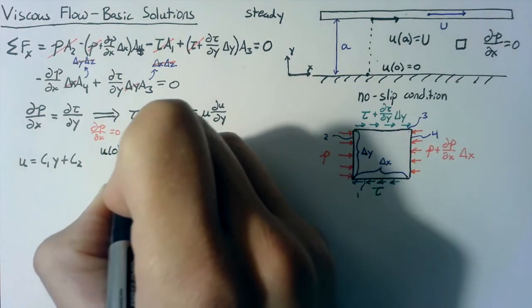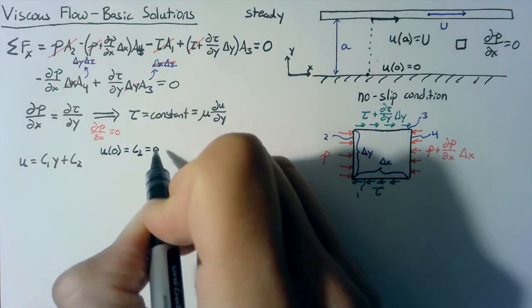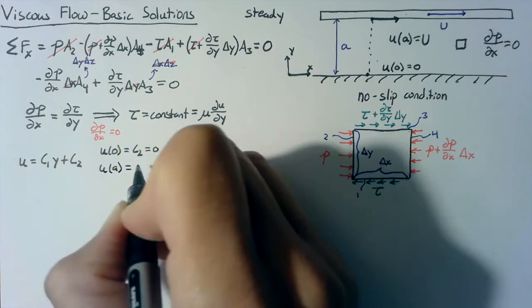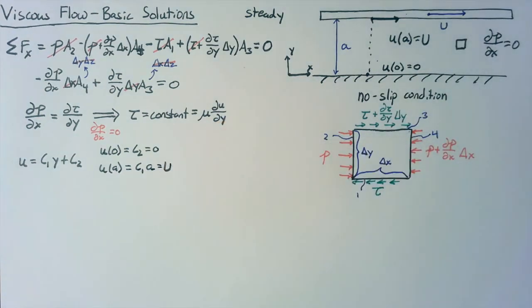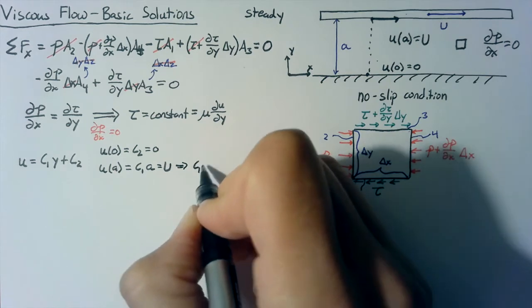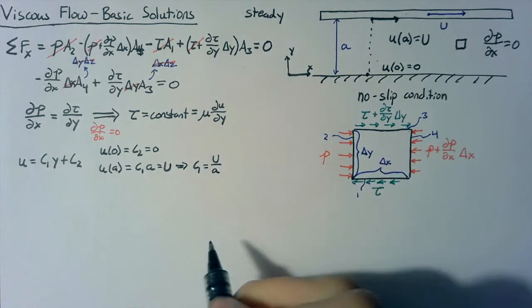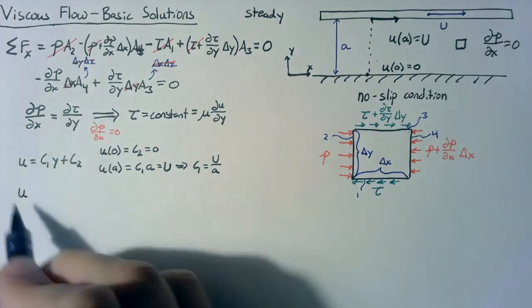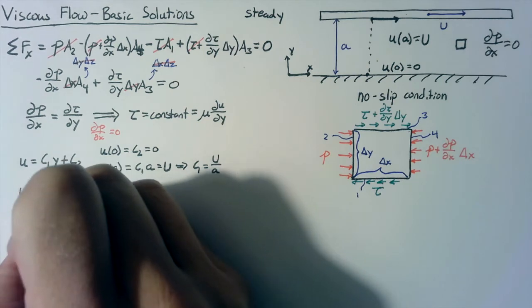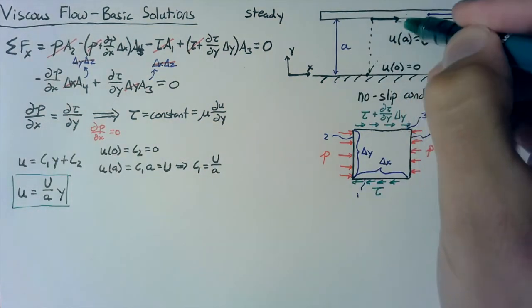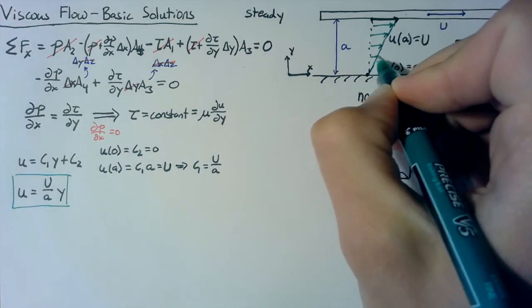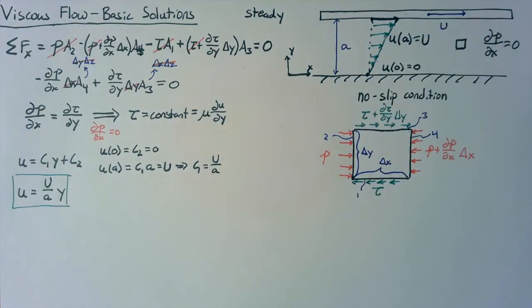So u of 0 is just going to be equal to c2, and we've said that that's equal to zero. u of a now is just going to be equal to c1 times a, and that's equal to this capital U, the velocity of our top plate. And that means that c1 is equal to u divided by a. So our final result here is that our velocity over the entire flow field is equal to this capital U divided by a multiplied by y. And this is just a straight line. So essentially our velocity profile is just a straight line connecting these two points. And that's our entire solution for any situation where dpdx is equal to zero. It's just a straight line connecting the velocity of the top plate to the velocity of the bottom plate.